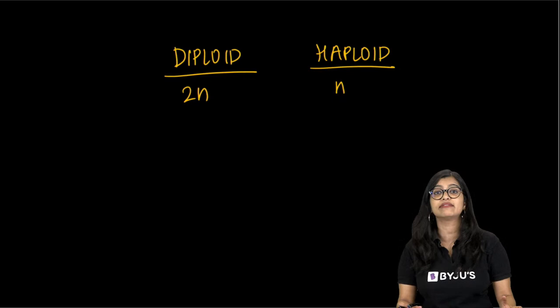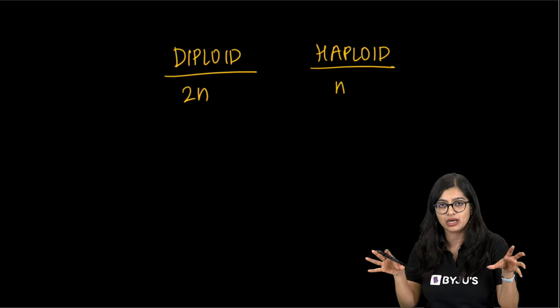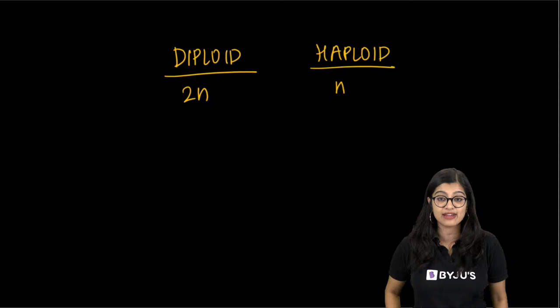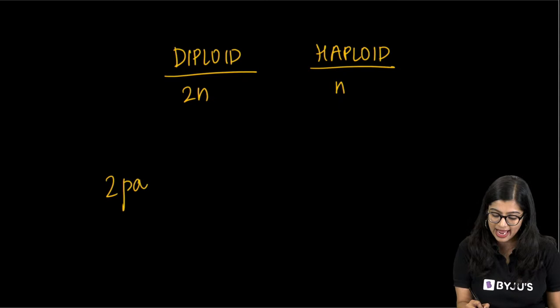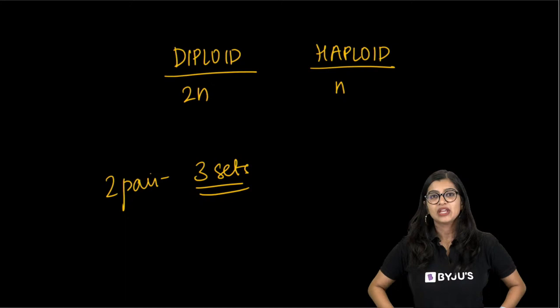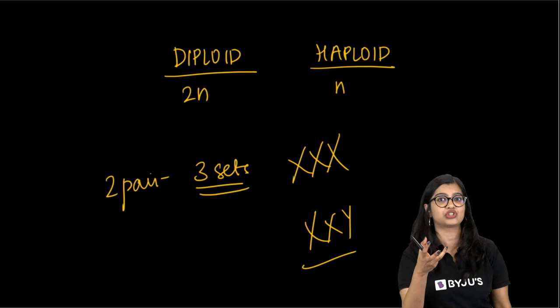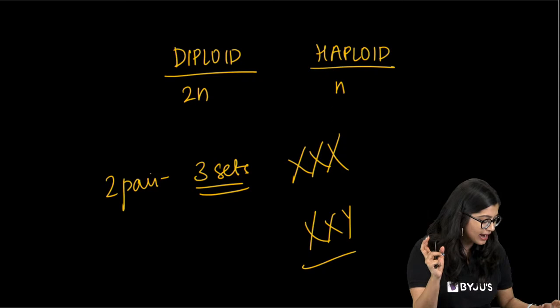Difference between haploid and diploid: diploid cells have 2n — always in pairs — while haploid have only half, not in pairs. Why does reductional division happen in meiosis? For the very same reason the chromosome number in our body has to be maintained — you don't want the zygote having 92 chromosomes. To maintain chromosomal number from parent to offspring we have meiosis. If a child has 47 or 45 chromosomes there can be various syndromes — for example extra sex chromosome conditions like XXX or XXY can lead to certain disabilities or changes in the body.